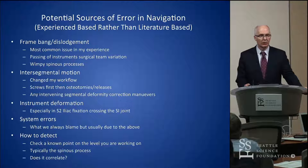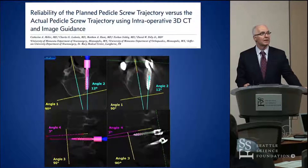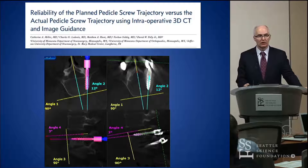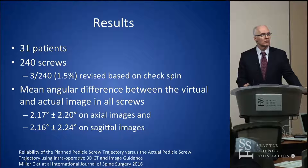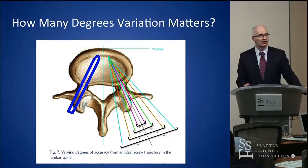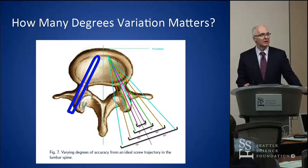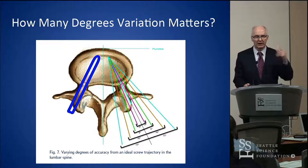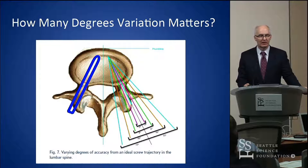I play a game with my residents: find the starting point and trajectory without using navigation, then use navigation to confirm whether you're close. We looked at the comparison between virtual versus actual accuracy — after placing about 240 screws we found about a 2% variation. A 2% variation in a big lumbar pedicle is not a big deal, but in a thoracic pedicle, a 2% variation may actually be significant.